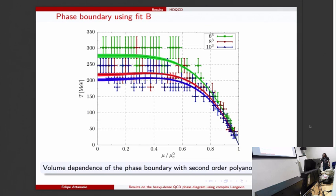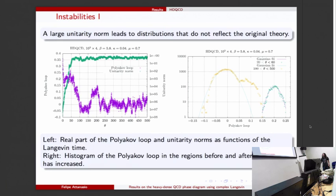In this instability section, this plot here shows the Polyakov loop here in purple and green the unitarity norm. For this particular setup of heavy dense quarks, the unitarity norm starts in a nice region, very small, but it increases and stays at order one. When this happens we see that the Polyakov loop changed behavior. Of course someone could say this is the physical part and this was thermalization, but you can see if you do histograms for before it rises too much and after...